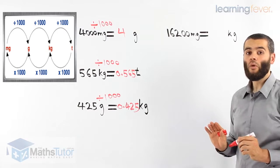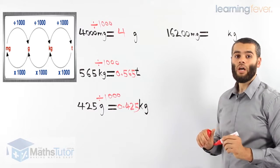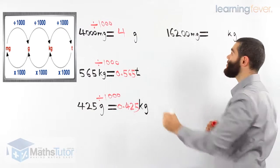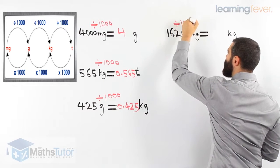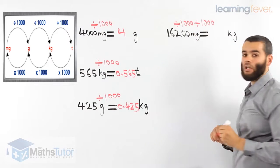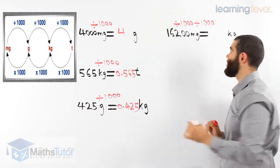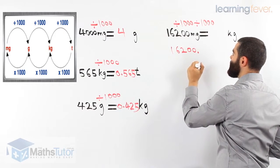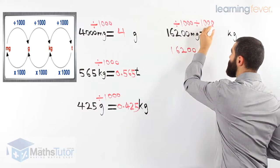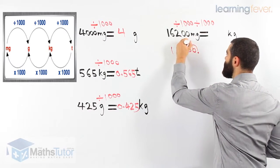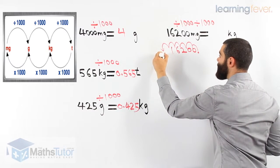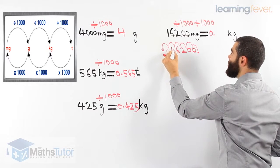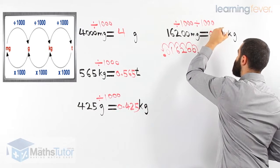Last example. We're going from milligrams all the way to kilograms. Sixteen thousand and two hundred milligrams — how many kilograms is that? It's a two-stage process: we go through grams and then to kilograms. We divide by a thousand to go to grams and divide by another thousand to go to kilograms. So in reality we are dividing by a million — six zeros. Sixteen thousand two hundred: the point moves six places to the left, giving us zero point zero one six two kilograms.